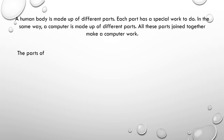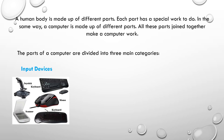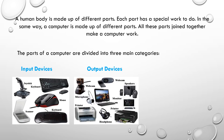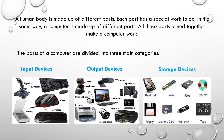The parts of a computer are divided into three main categories: input devices, output devices, and storage devices.